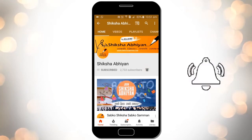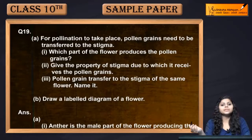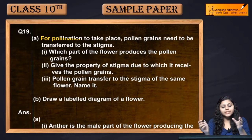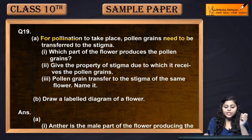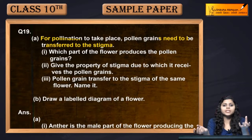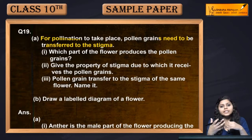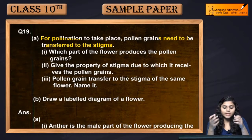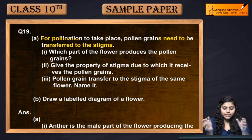Question number 19: For pollination to take place, pollen grains need to be transferred to the stigma. Pollen grains ko stigma tak paunchna zaruri hai — agar fertilization honi hai, kisi plant mein, kisi flower mein fertilization hone ke liye.